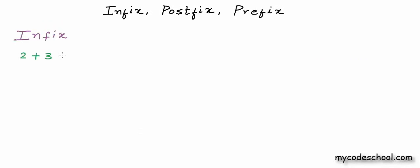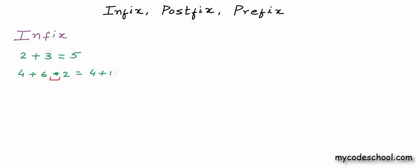For an expression with just one operator, there is no problem — we can simply apply that operator. For an expression with multiple operators and no parentheses, we need to decide an order in which operators should be applied. In this expression, if we perform the addition first, it reduces to 10 times 2, evaluating to 20. But if we perform the multiplication first, it reduces to 4 plus 12, evaluating to 16. So we can look at this expression in two ways, creating ambiguity.